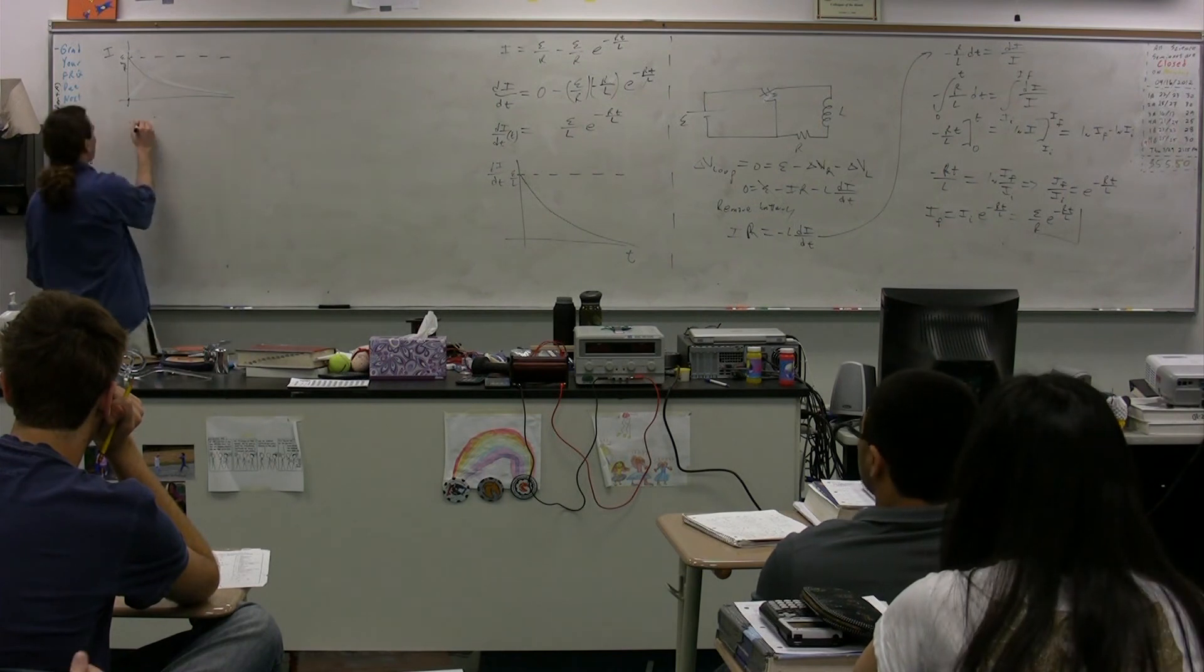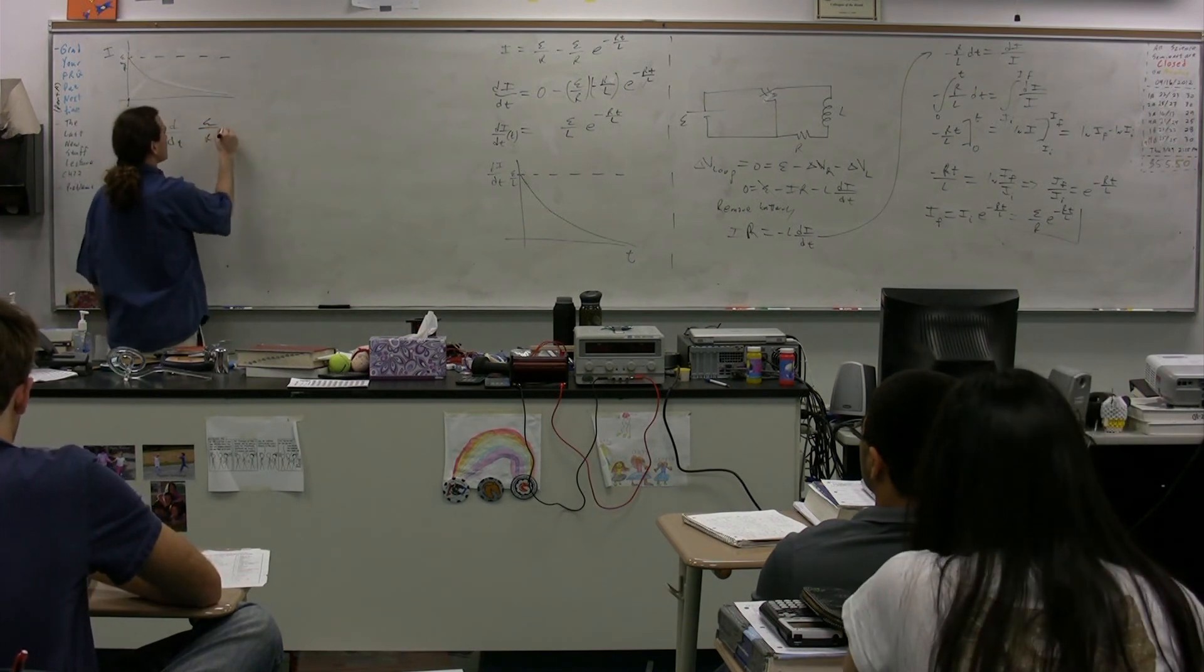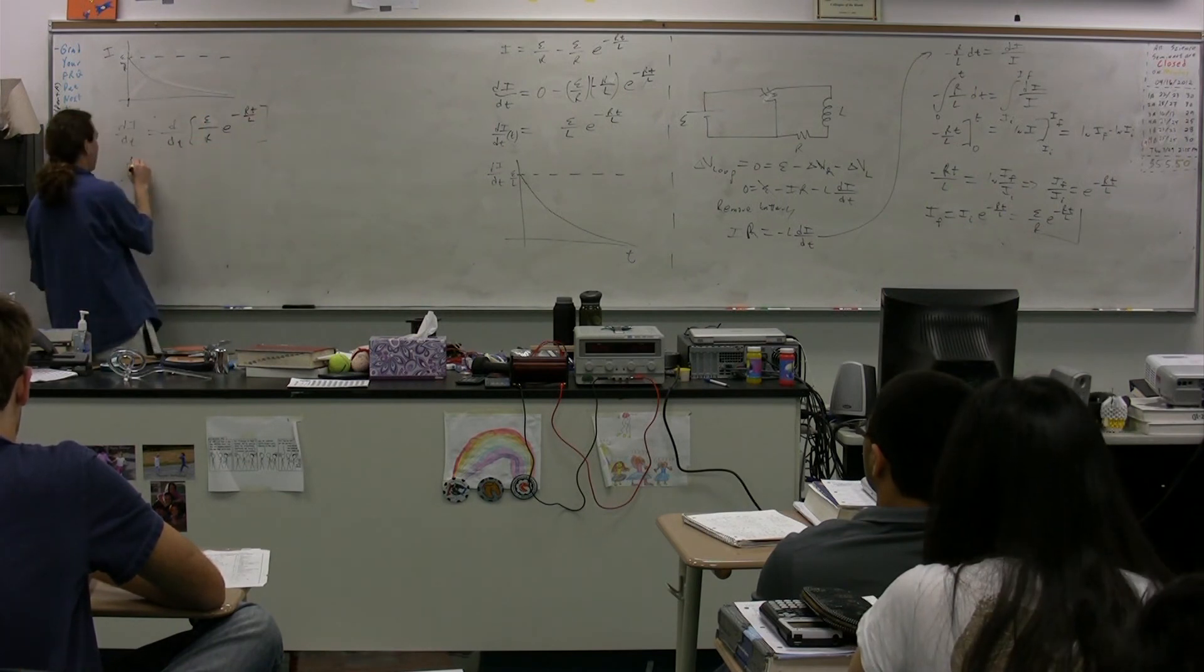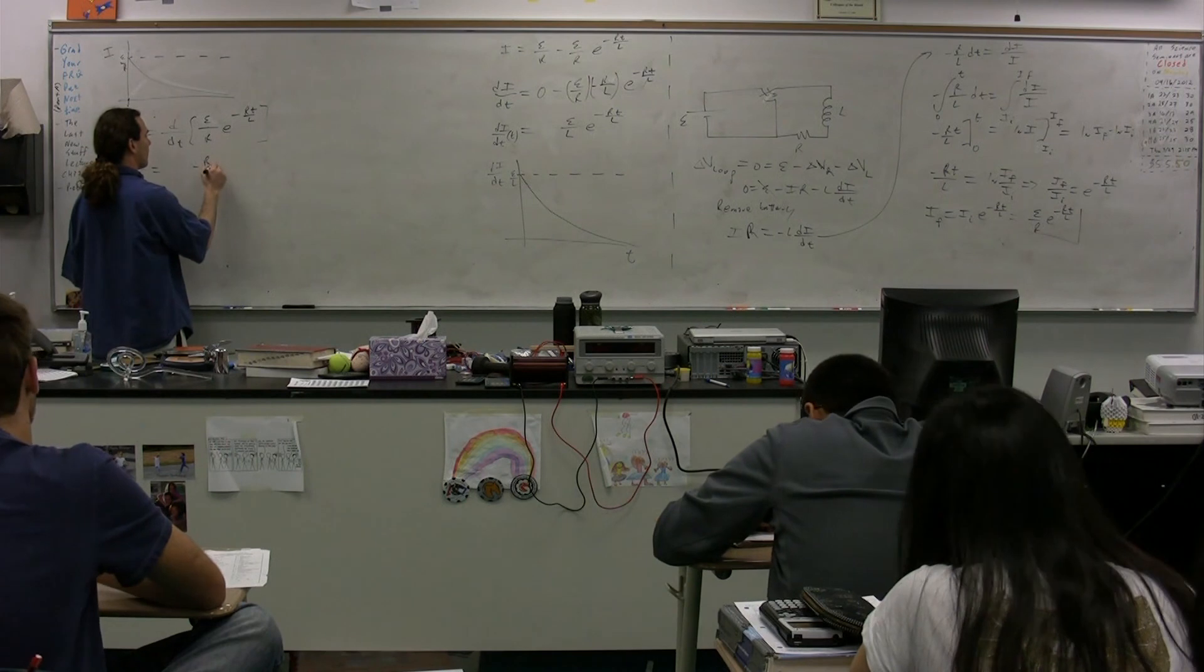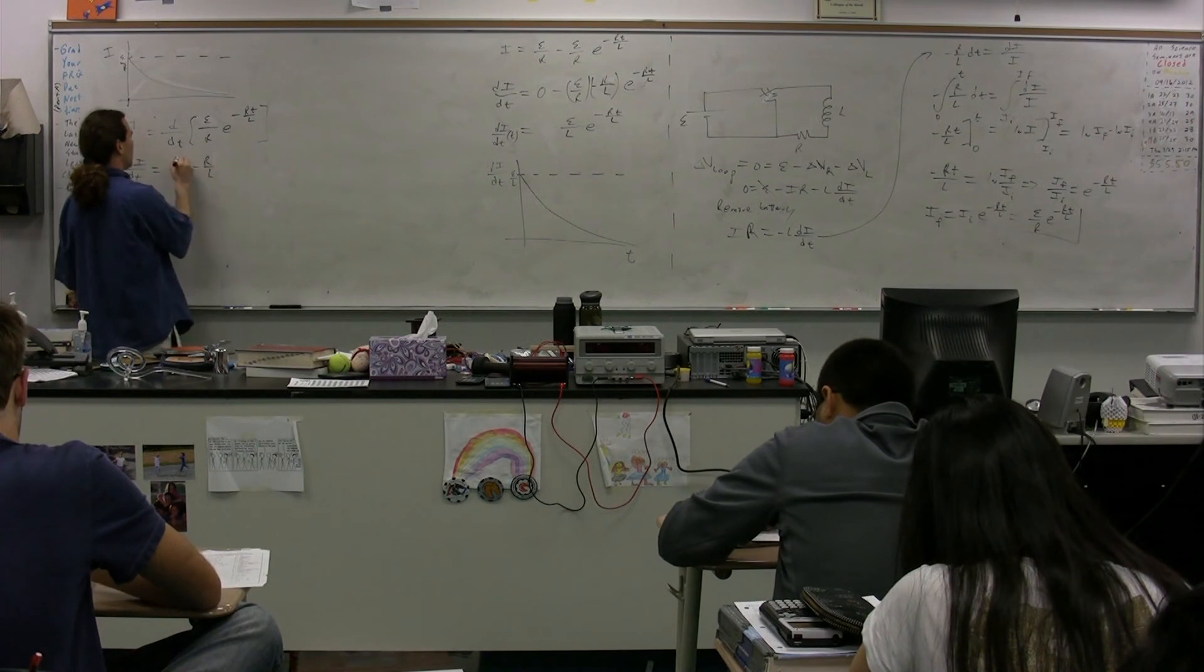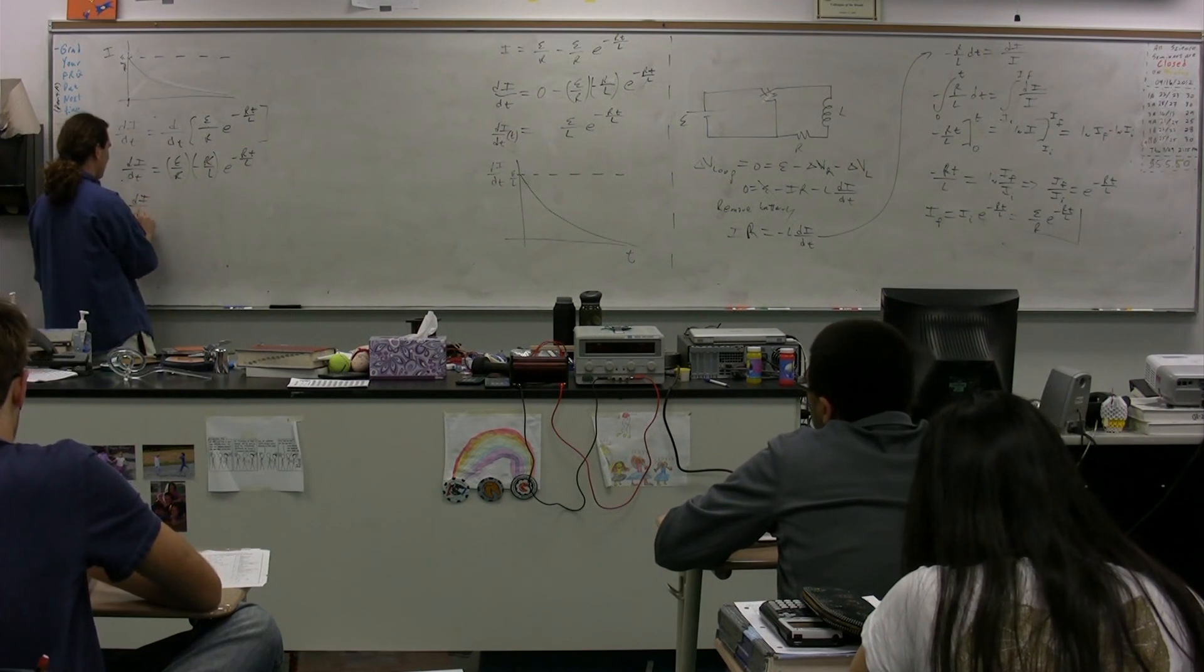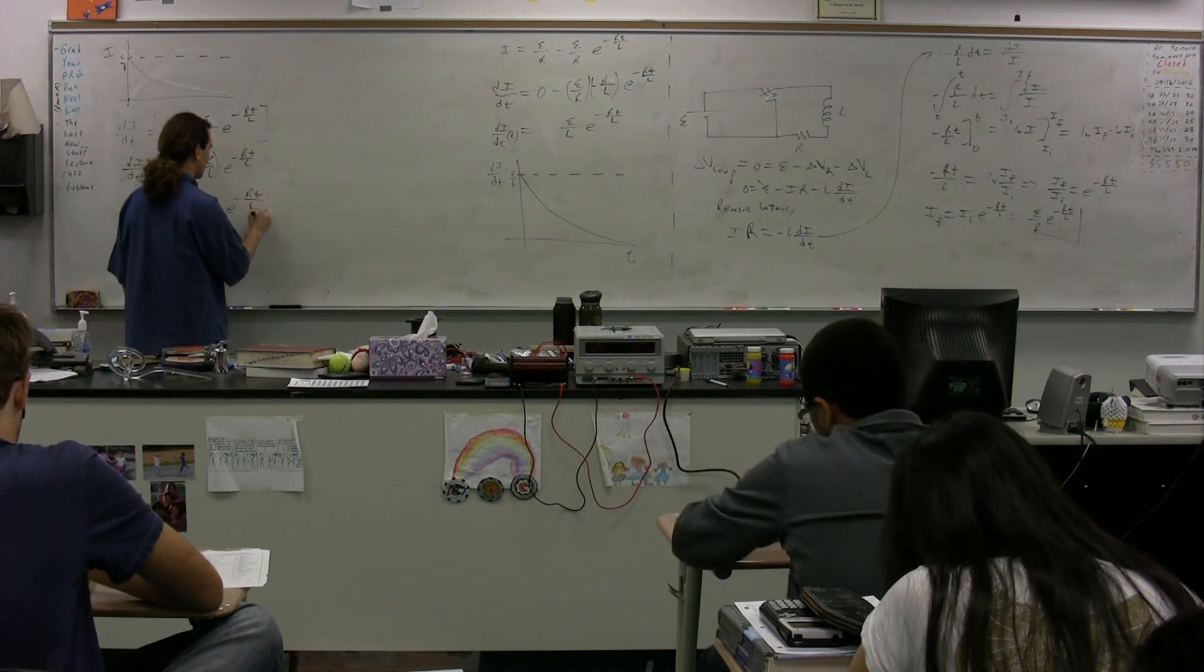We can figure out how the current changes as a function of time by taking the derivative of this equation. The EMF divided by the resistance times E to the negative Rt over L. Okay, so you take the derivative of the power, so you just have negative R over L, which is multiple of that constant of the EMF over R, and then you just make it E raised to the negative Rt. Great. Resistance cancels out again. We get dI/dt, the change in current as a function of time, is equal to the negative EMF over the inductance times E to the negative Rt over L.